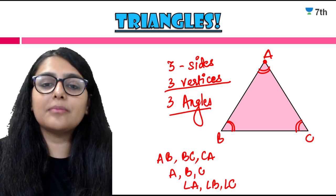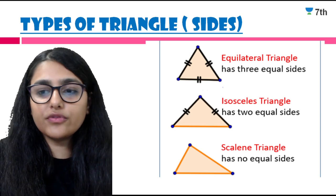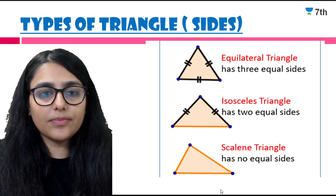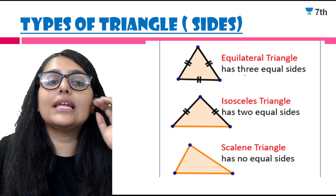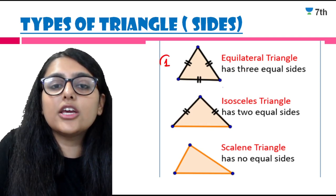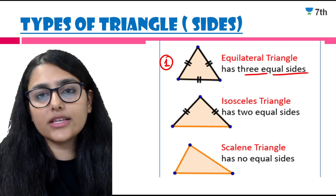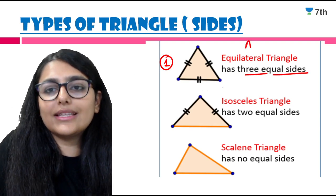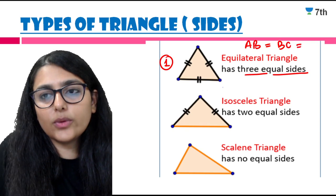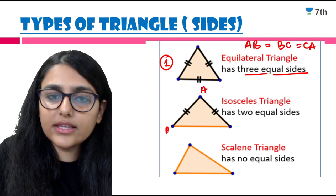Now let's classify these triangles. Let's study the types of triangles based on the length of the sides. First is the equilateral triangle — it has 3 equal sides, so AB = BC = CA. Next we have an isosceles triangle — it has at least 2 equal sides, meaning two sides are equal to each other.